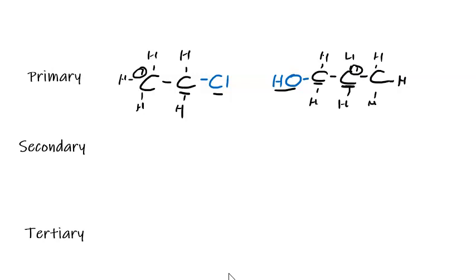For a secondary haloalkane or alcohol, the carbon that is bonded to either the halogen or the hydroxy group will be bonded to two other carbons. So what that will look like is that you'll have a straight chain and the halogen or the hydroxy group will be bonded somewhere in the middle. So that could look like 1, 2, 3.